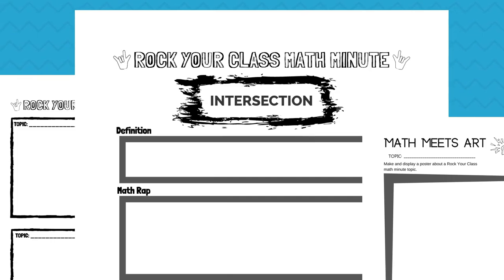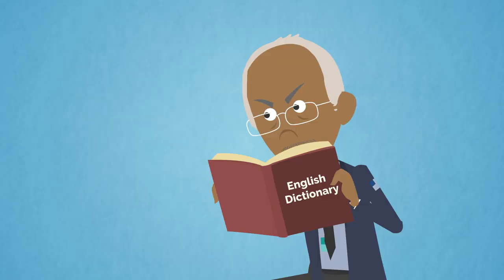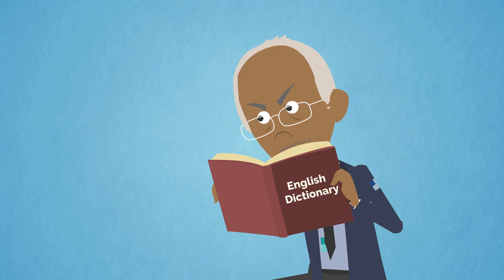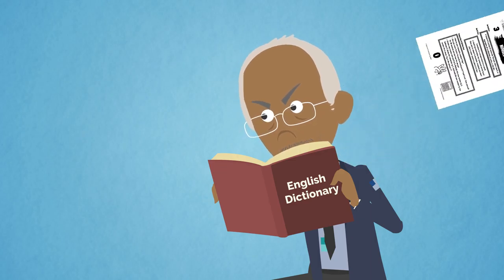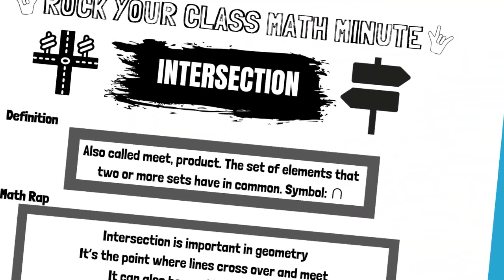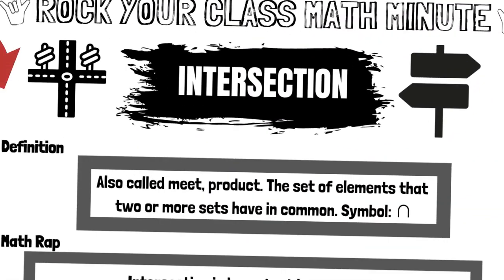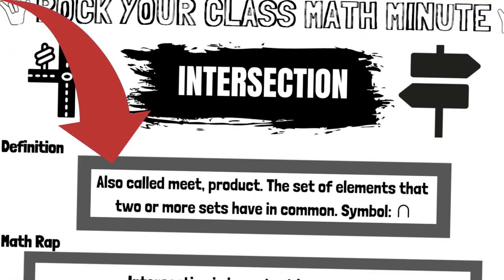Intersection. What does the dictionary say? Also called meet product — the set of elements that two or more sets have in common. Symbol: ∩.